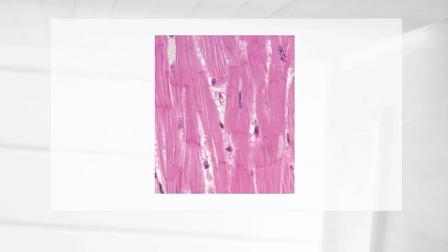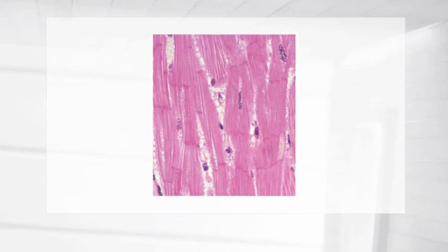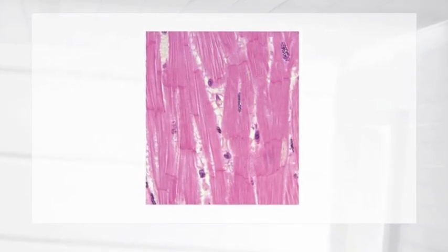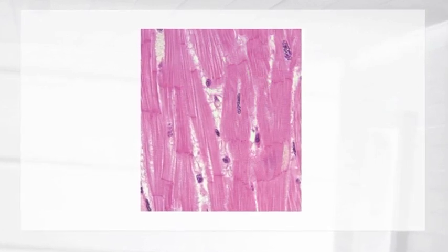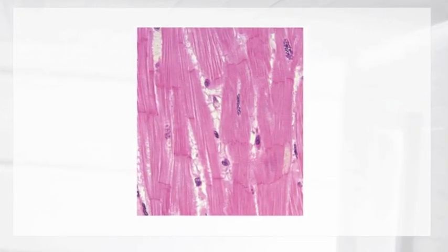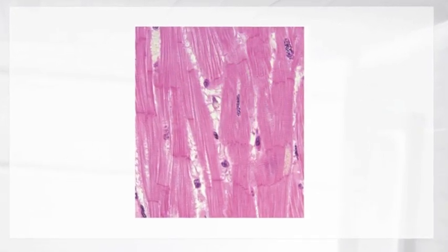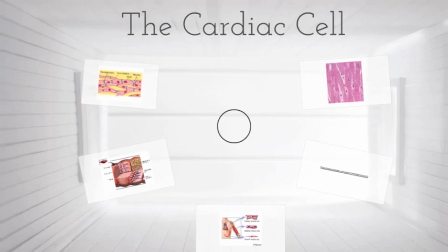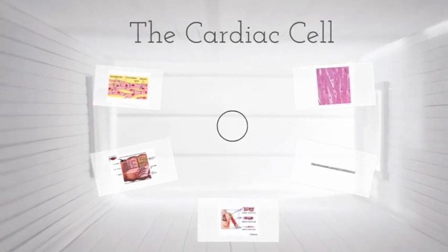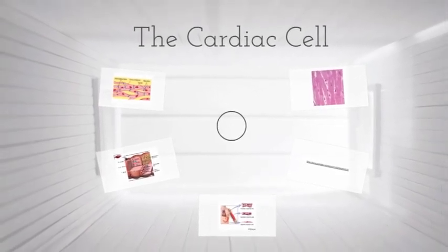This is a picture under the microscope of the cardiac muscle cell. The dark pink vertical lines that you see are the intercalated discs. The circular purple spots are the nuclei, and the vertical lines show how the cells are striated. And this is what you need to know about the cardiac muscle cell.